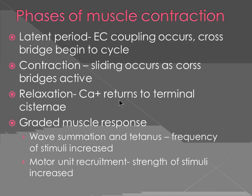If you do a muscle twitch in the lab, there are three phases of muscle contraction. First is the latent period — nothing visually observable is happening, but inside, excitation-contraction coupling is occurring and cross-bridges are beginning to form. Second is the period of contraction, when sliding actually occurs. Third is relaxation, when calcium returns to the terminal cisternae and the fiber comes back to its original state.